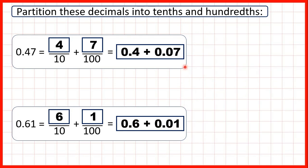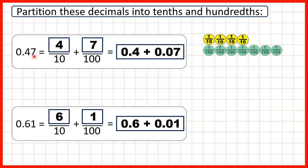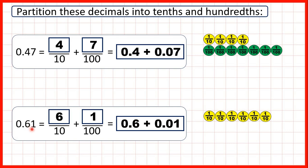We could also show the place value counters. With 0.47, we have four tenths and seven hundredths. With 0.61, we have six tenths and one hundredth.